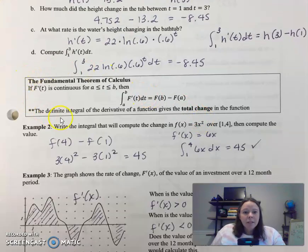Now that leads us into this fundamental theorem of calculus. So if you have a definite integral from a to b of f prime of t dt, now this is really important. Notice that it's saying it's equal to f of b minus f of a, but that's not f prime.